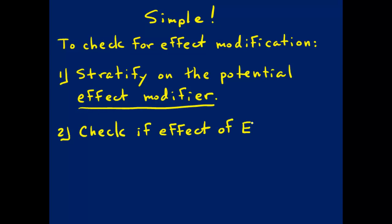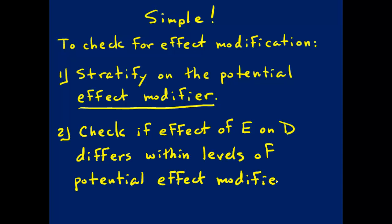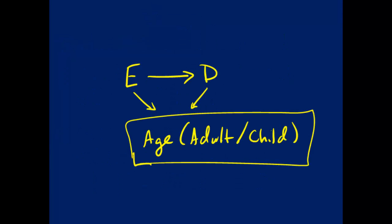Then you check if the effect of exposure on disease differs within levels of the potential effect modifier. Remember that stratifying is a kind of conditioning. So if you're stratifying — whether for controlling confounding or looking for effect modification — you need to think about whether the variable on which you're stratifying is going to open any backdoor path within your DAG. Check this against your DAG before you start. If it opens a backdoor path, you need to block that path using another variable if possible. If not possible, you won't be able to stratify by that variable and check for effect modification.